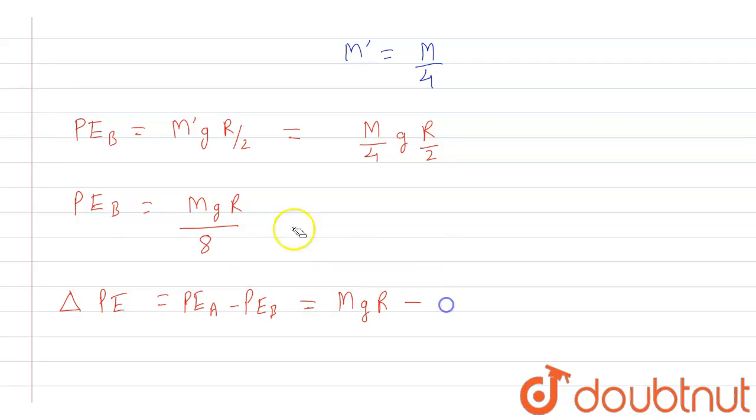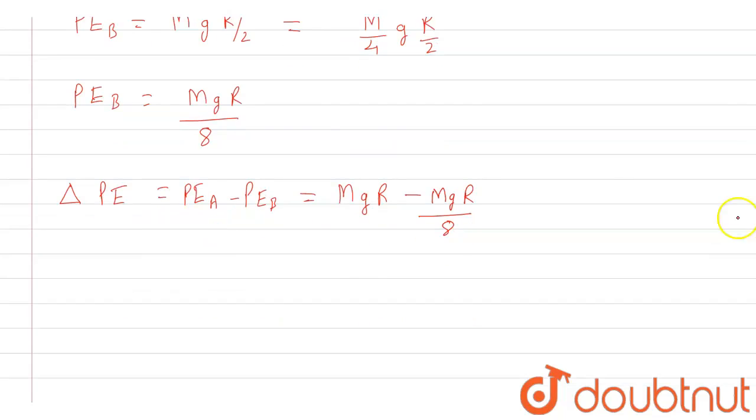It is MGR by 8. And from this the decrease in potential energy, that is delta PE, will come out as 7 MGR by 8. So this is the value that we have obtained in the end. And this is the answer of this question.